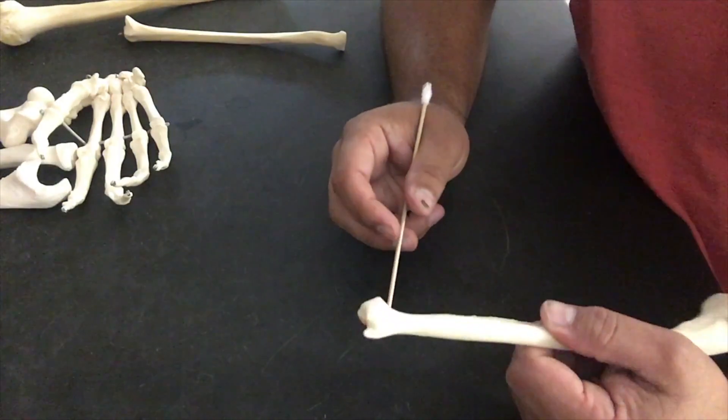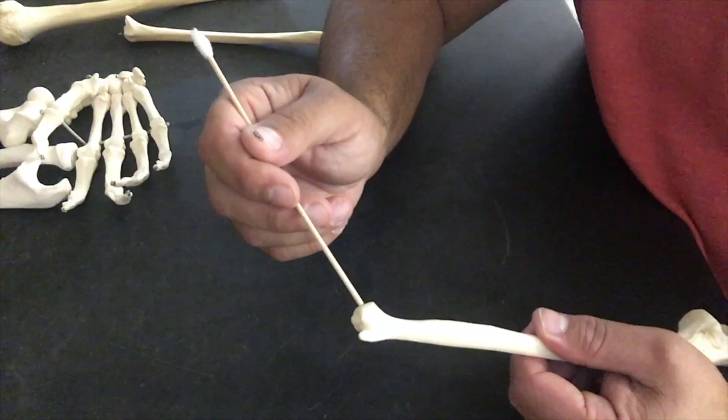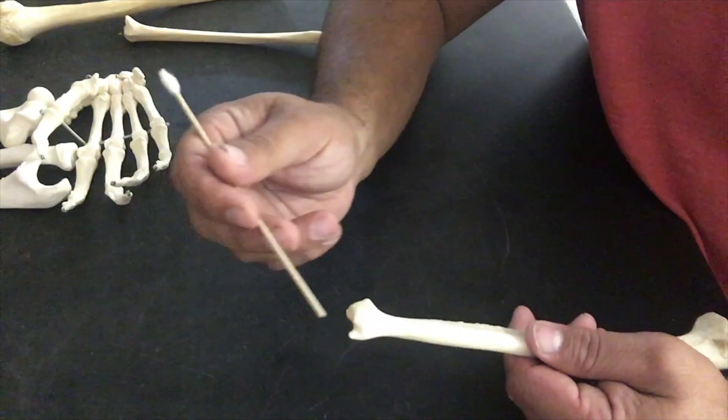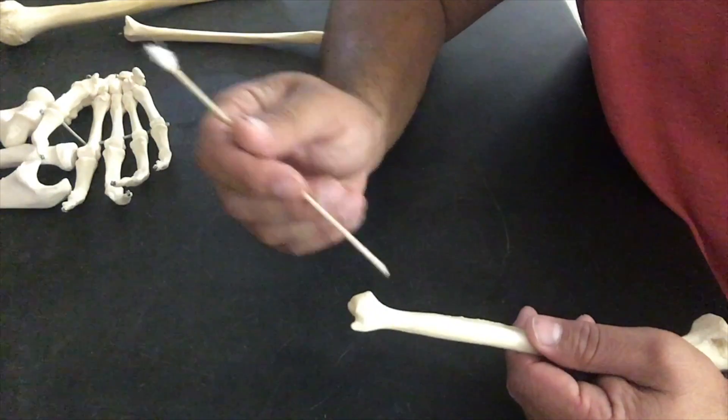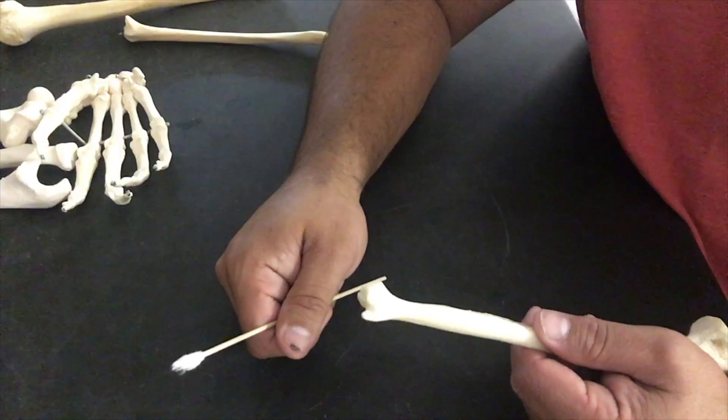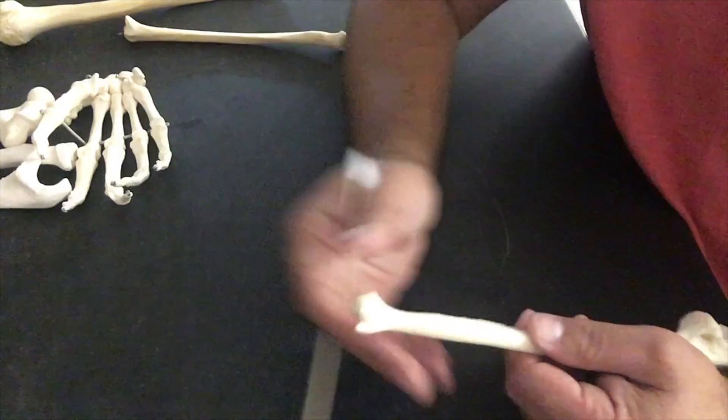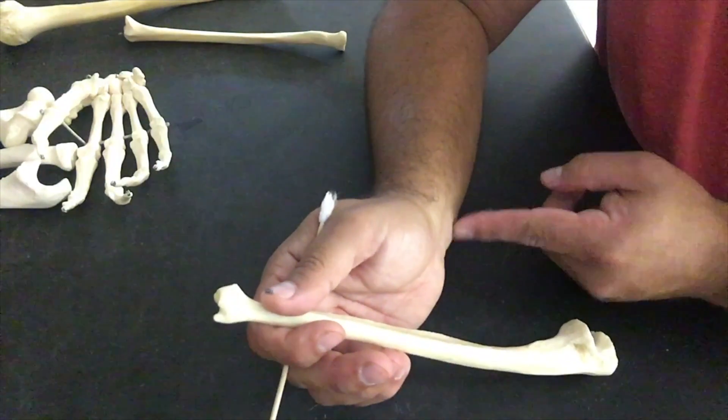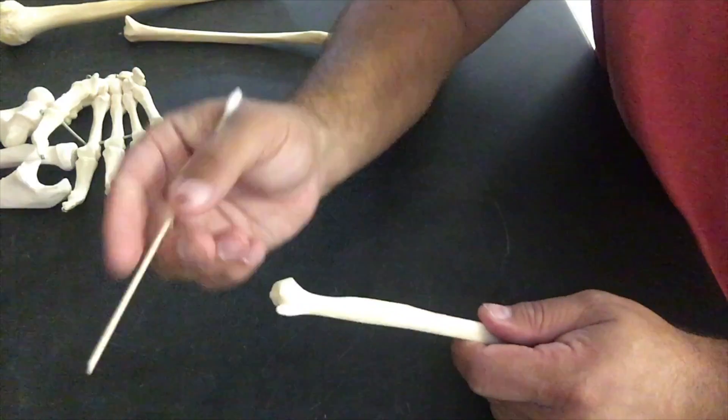If we go to the distal most aspect, we have the head and we have the styloid process. The nice thing about the styloid process on both the radius and the ulna is this is easily palpable. You can feel this on the inside and outermost aspects of your wrist. So feel through your wrists—feel those big bony bumps. Those are your styloid processes.